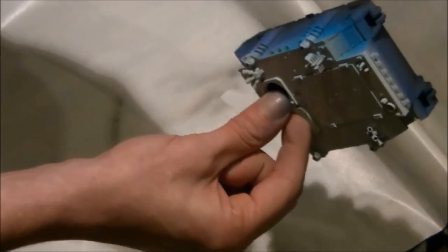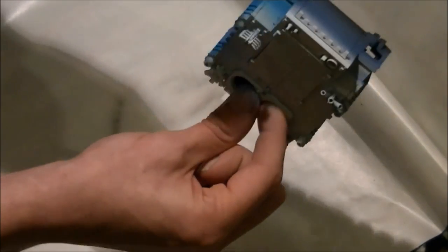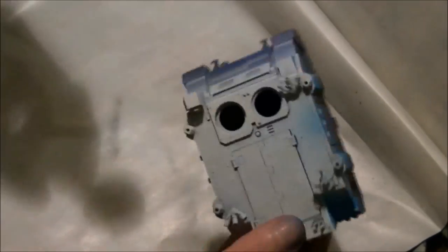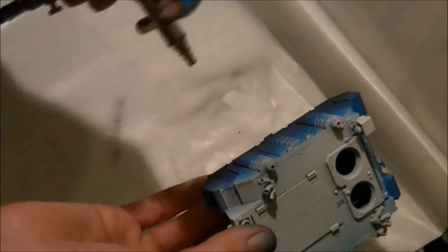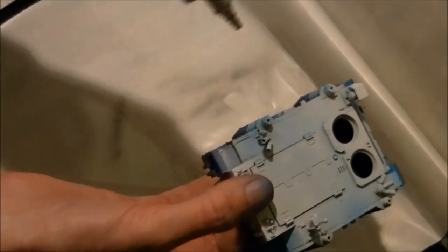This next colour is Macragge blue from the layer range. I'm going to use the same technique and overlap half of the previous colour and then I'm going to spray everything up of that in this colour so the rest of the sides and the top of the tank as well.